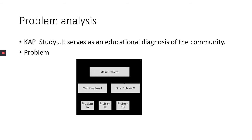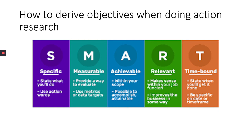Research objectives should all follow the acronym SMART. Your objective should be specific — state what you will do and use action words. Measurable — provide a way to evaluate and use metric or data targets. Achievable — within your scope. You should not do something you cannot be able to do.